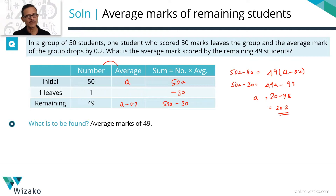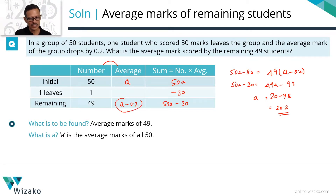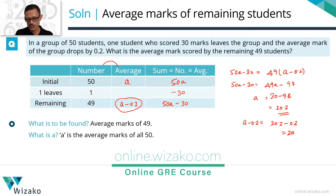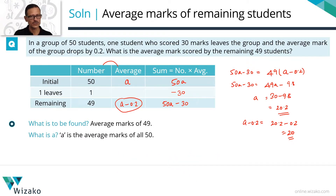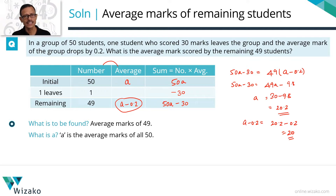What is A and what do we have to find? We need to compute the average marks of the remaining 49 students. A is the average of all 50 students, so the average of 49 students equals A minus 0.2. If A is 20.2, then A minus 0.2 equals 20. Always check what you assigned the variable for — getting A equals 20.2 is where the math ended, but the smartness comes in marking the answer as 20.